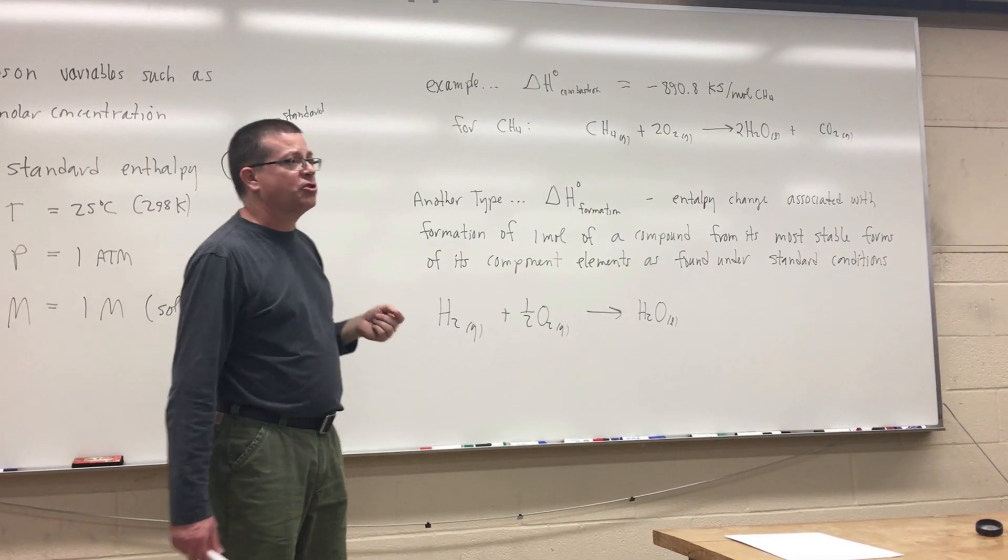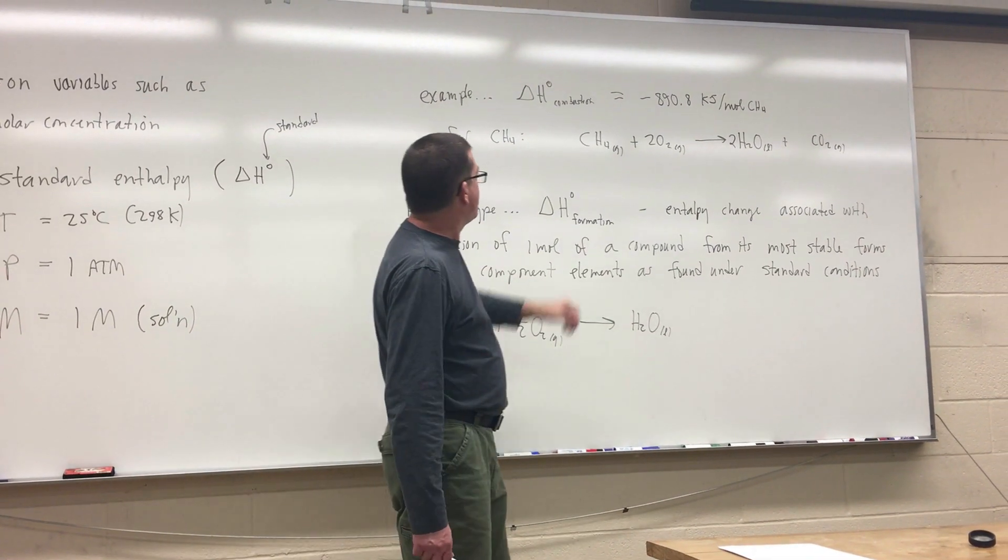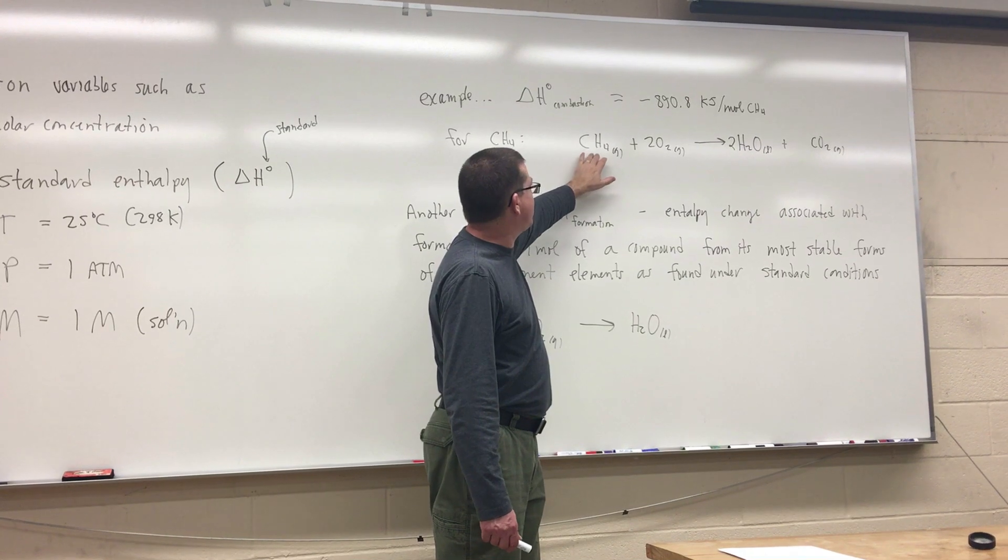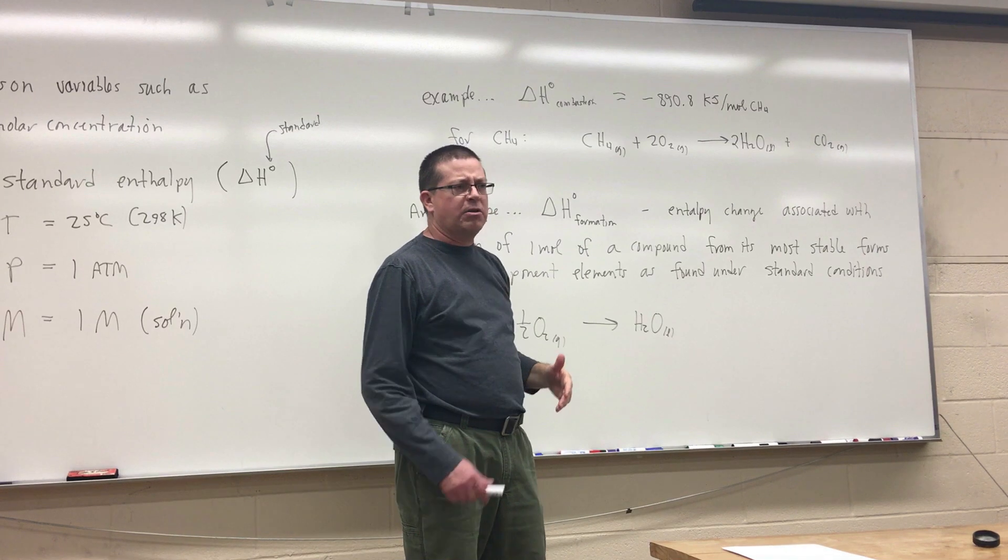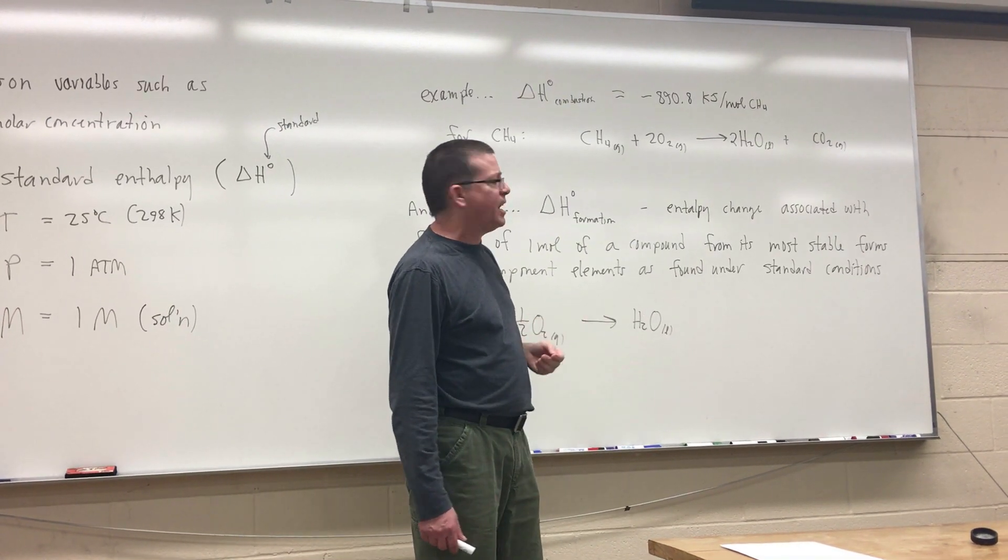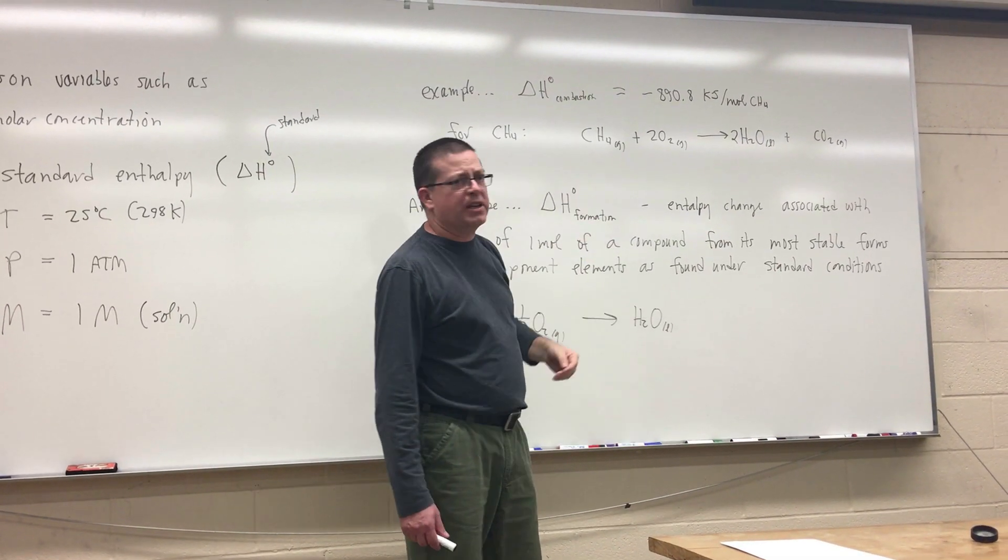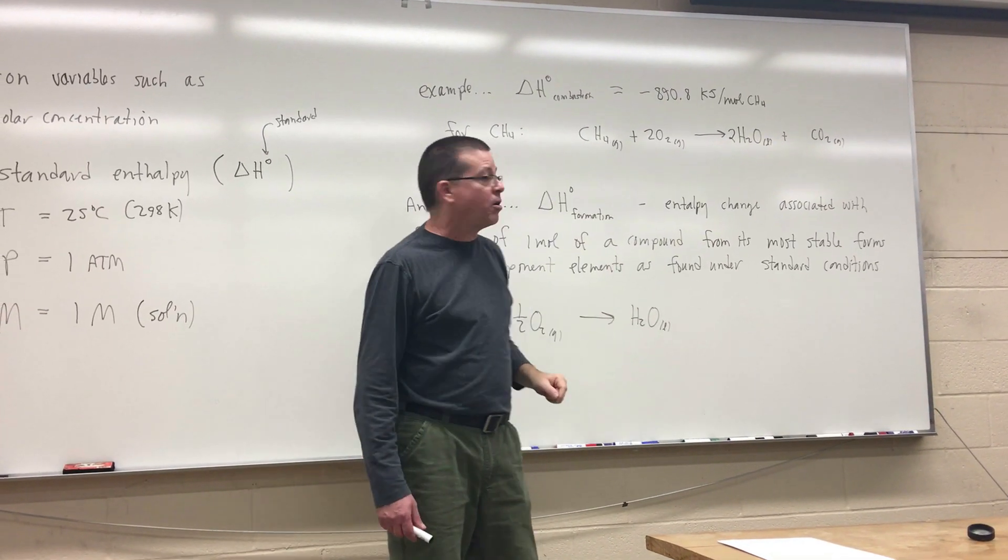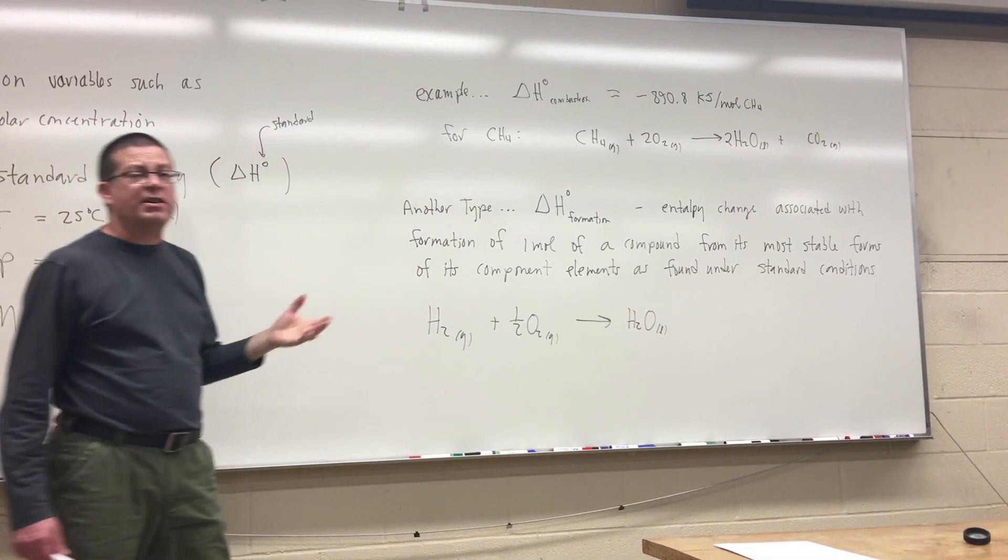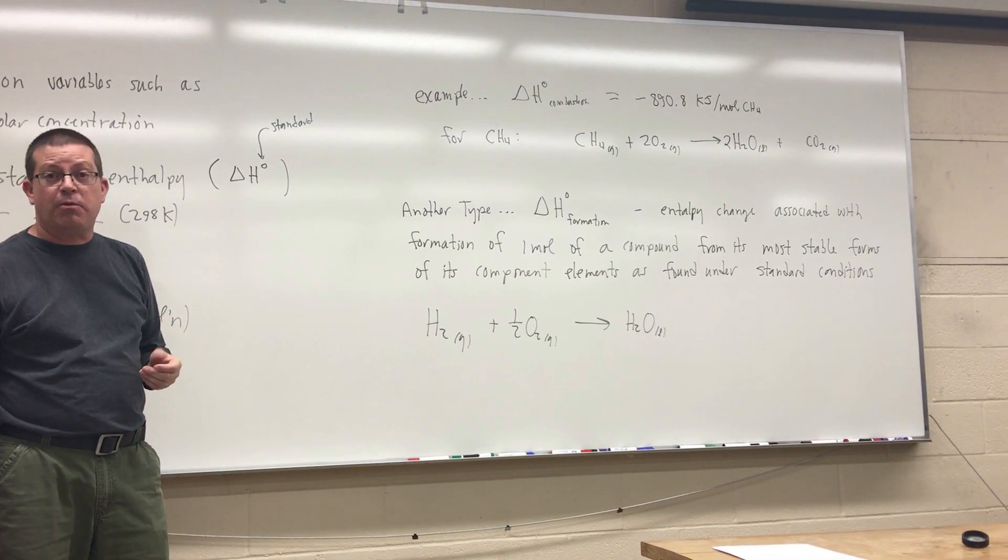The other thing that I have to make sure of is that I've got it per mole of the thing that I'm burning, because I'm talking about the delta H of combustion of CH4. So I always reference this per mole of CH4. So I try to set the stoichiometry up in such a way that I always end up with one mole of the hydrocarbon here. That's one type of standard enthalpy we can talk about.